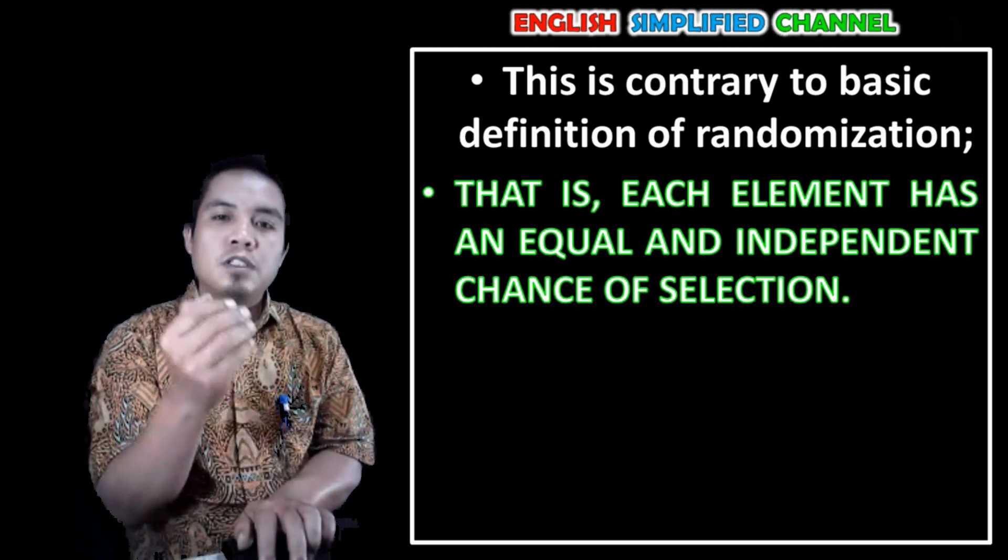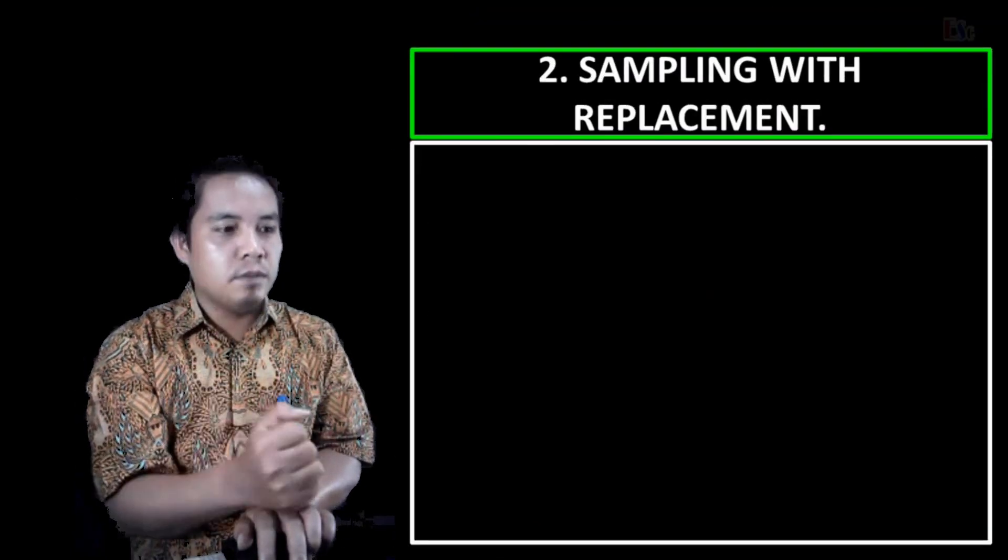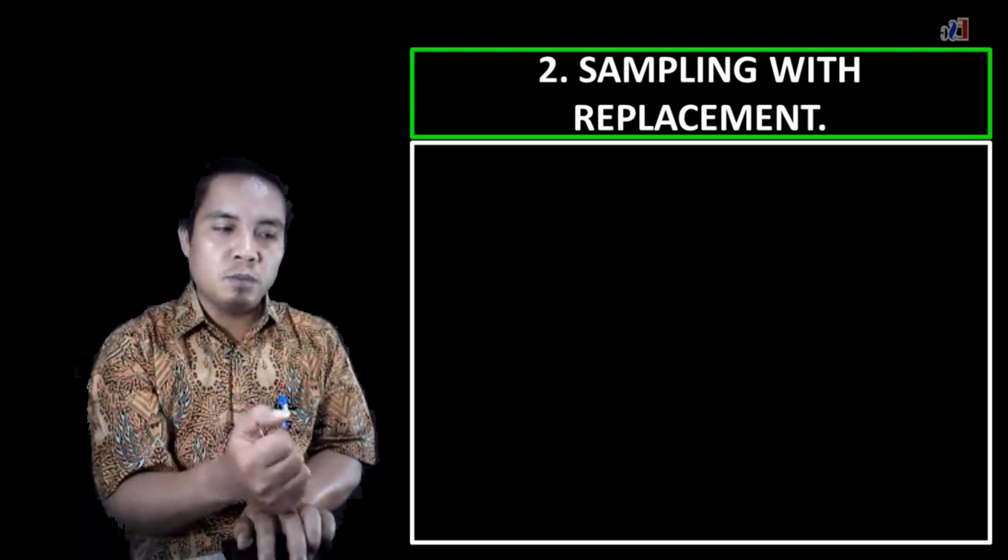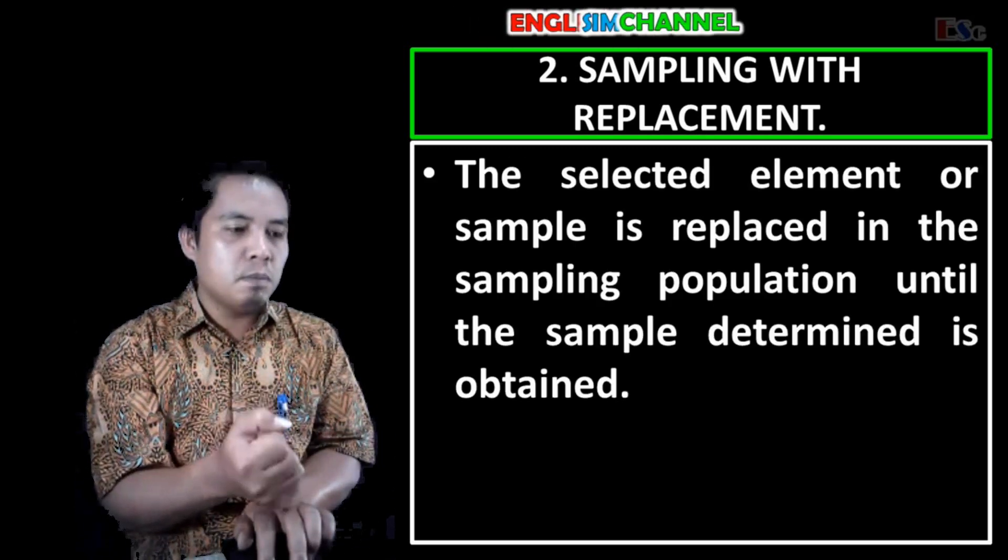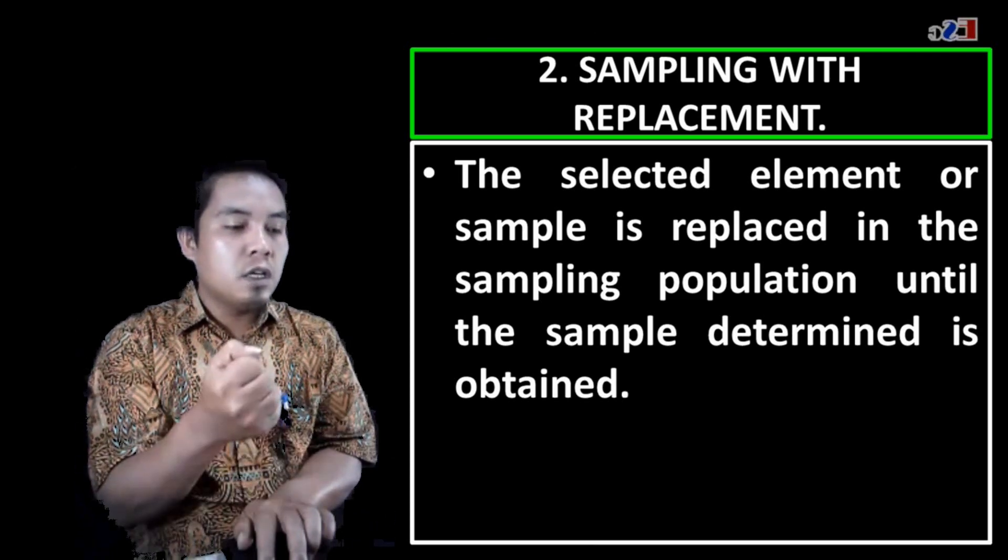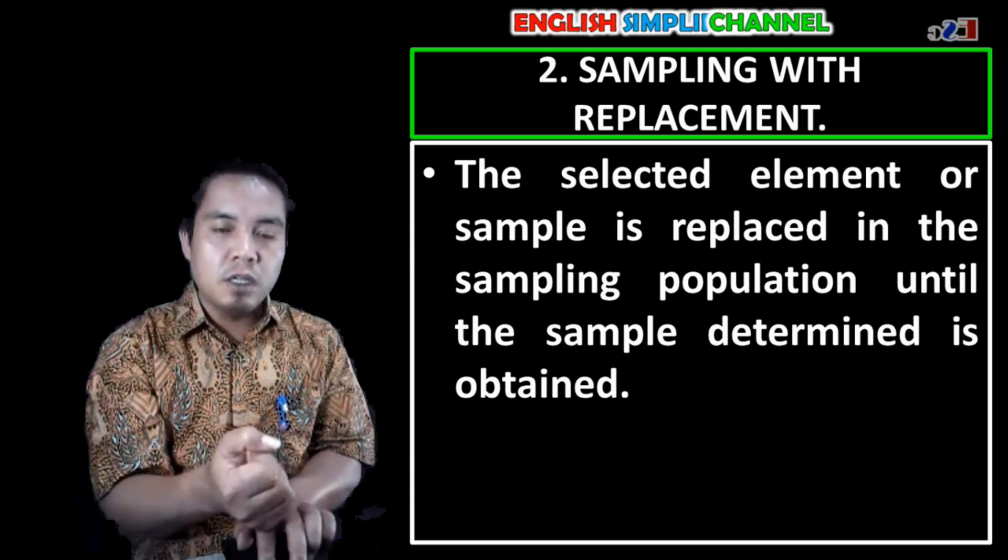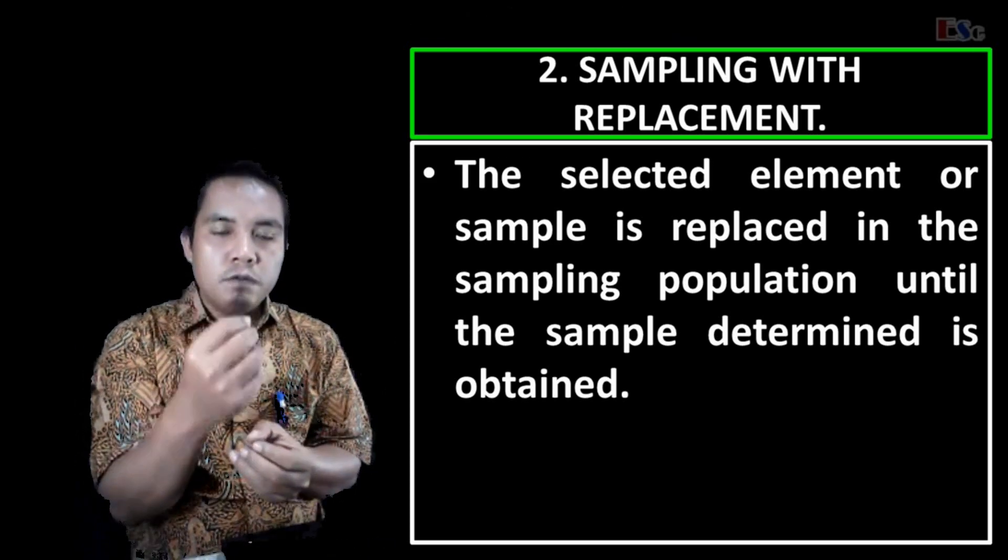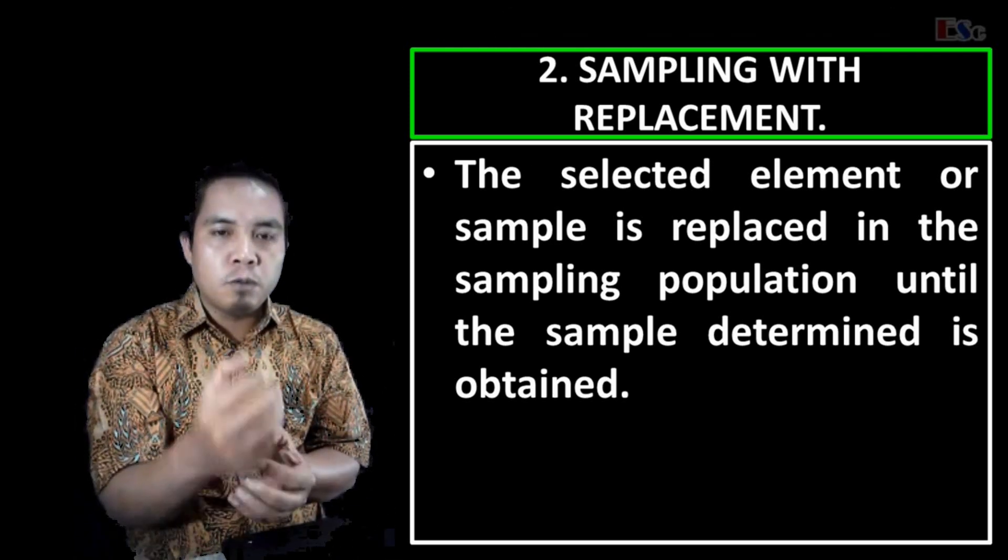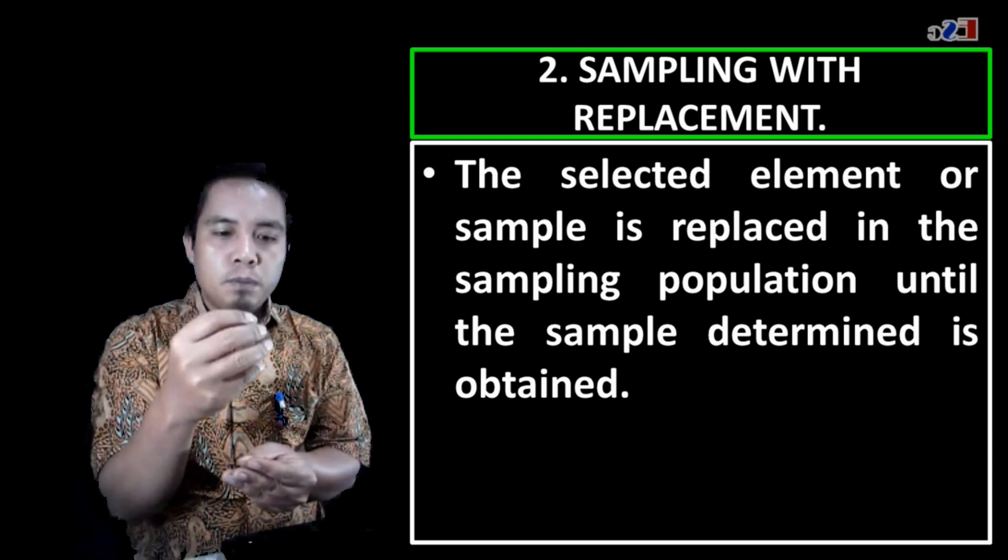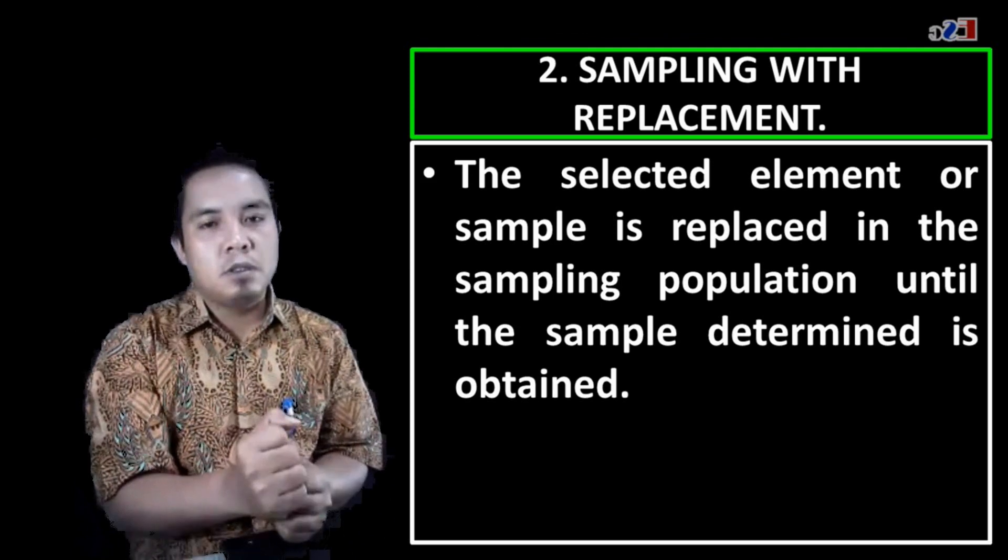So this is the second: sampling with replacement. It means the selected element or sample is replaced in the sampling population until the sample determined is obtained. It means if, for example, we want to take 10 names from 100, the probability from the first, second, to the third will be equal.